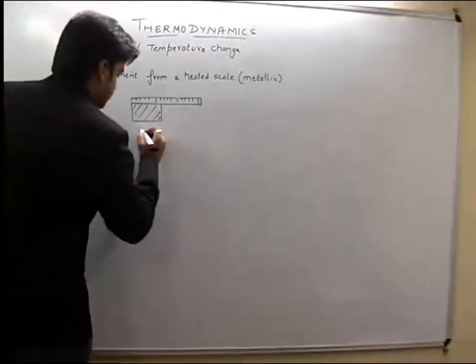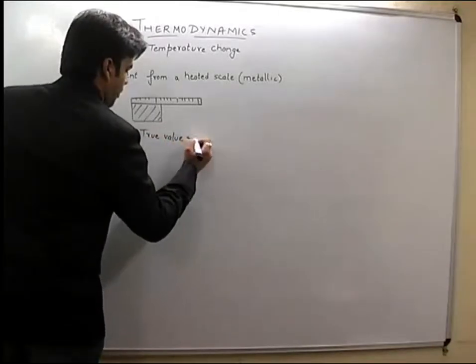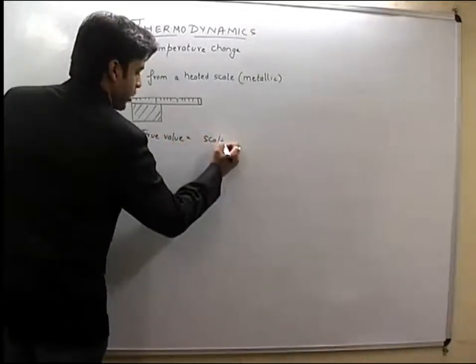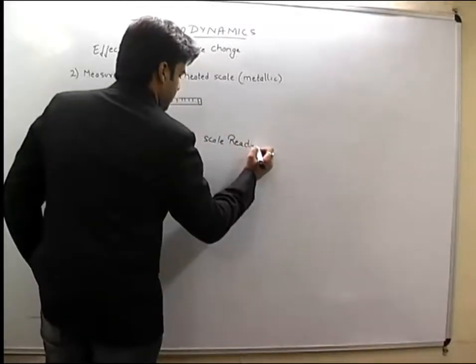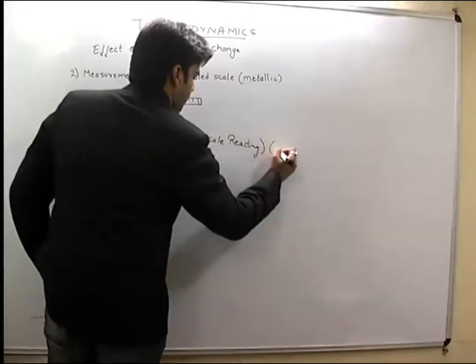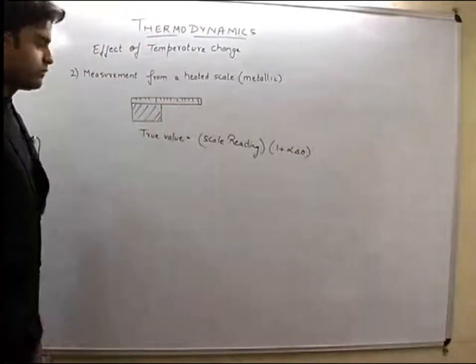True value will be equal to scale reading, which is the scale reading, into 1 plus alpha delta theta. Alpha, what is the coefficient of linear expansion of the scale?